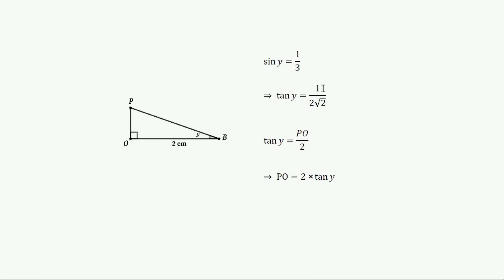Now, substitute tan Y equals 1 by 2 root 2. Then we get PO equals 2 times 1 by 2 root 2. Or PO equals 1 by root 2 centimetres.